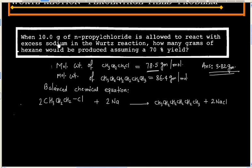We have been given 10 grams of n-propyl chloride, and we have to find mass of hexane formed.